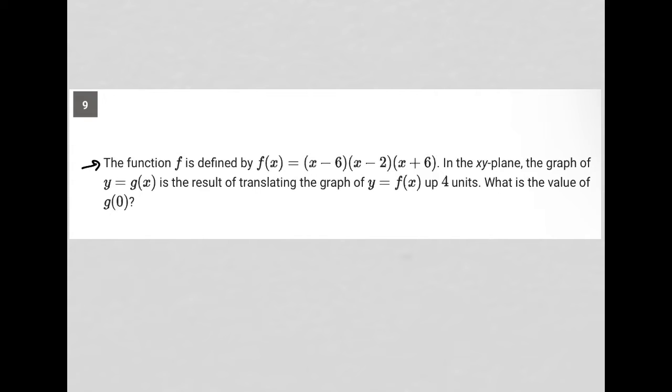The function f is defined by f(x) = (x - 6)(x - 2)(x + 6). In the xy-plane, the graph of y = g(x) is the result of translating the graph of y = f(x) up 4 units.